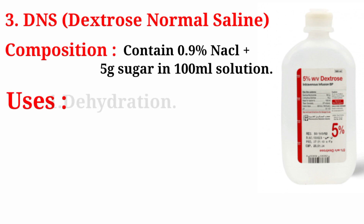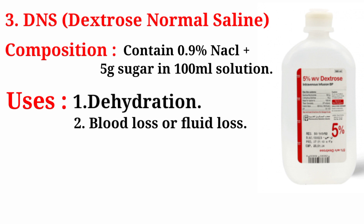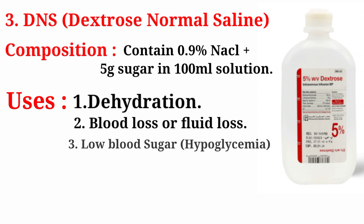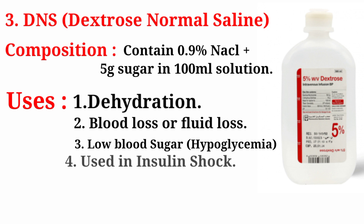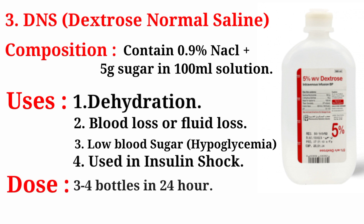Uses of DNS: number one, dehydration; number two, blood loss or fluid loss; number three, low blood sugar (hypoglycemia); number four, used in insulin shock. Dose: maximum three to four bottles in 24 hours.